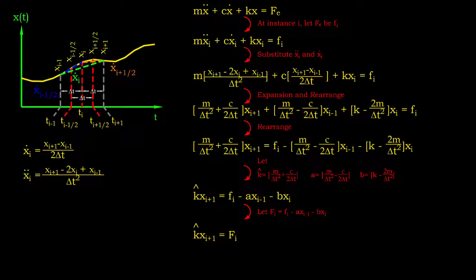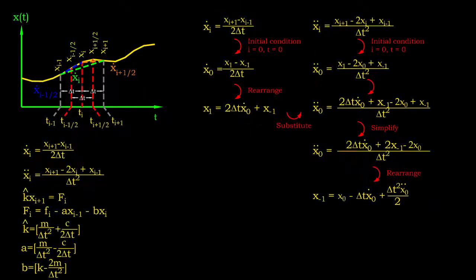At this point, we may introduce the constants effective stiffness a and b to simplify the equation. Also, let's introduce the load vector. From here, the displacement response at the next instance can be calculated using Hooke's law.